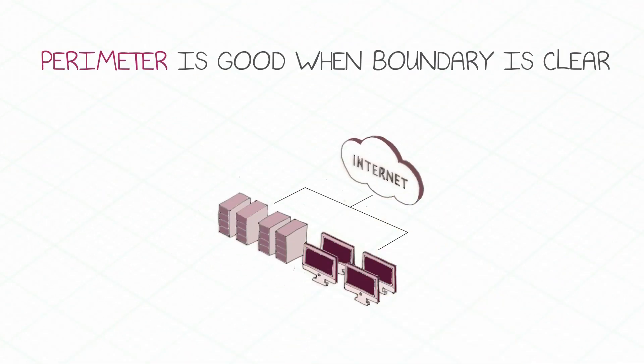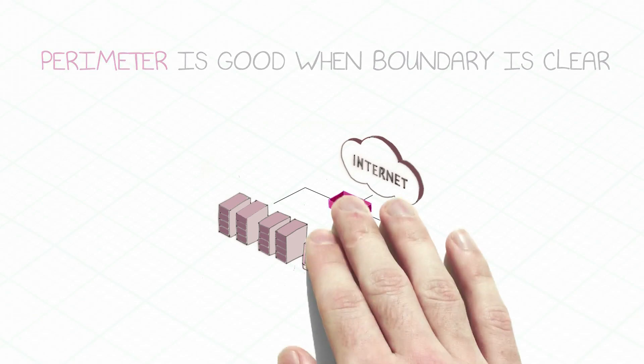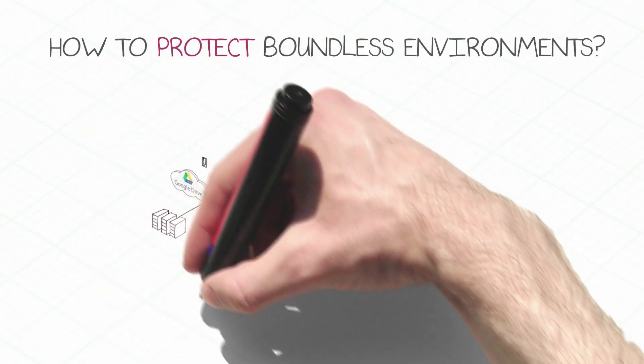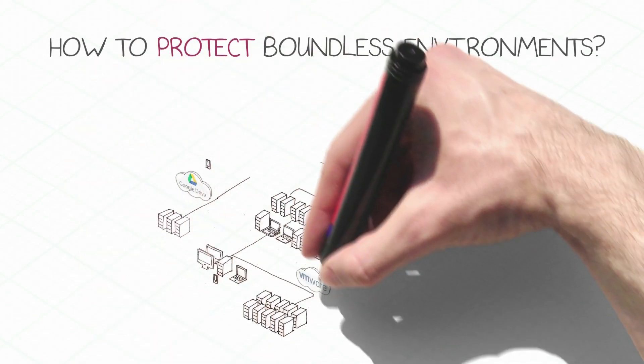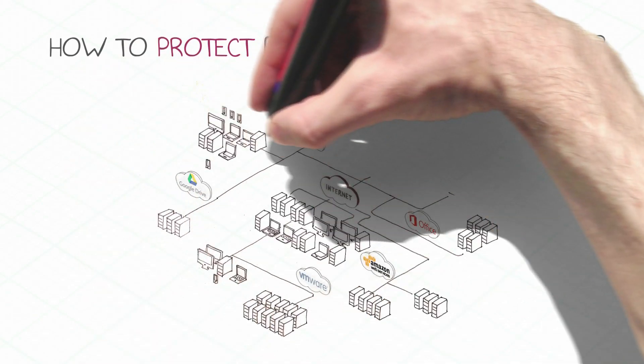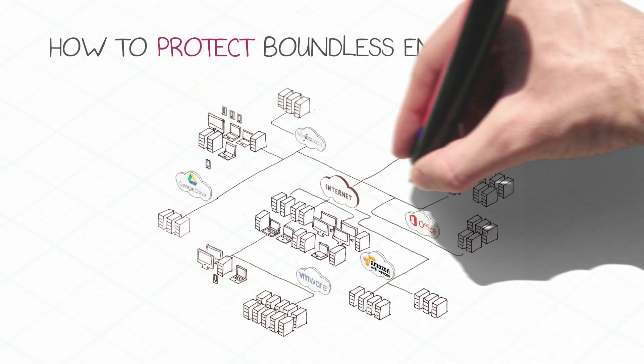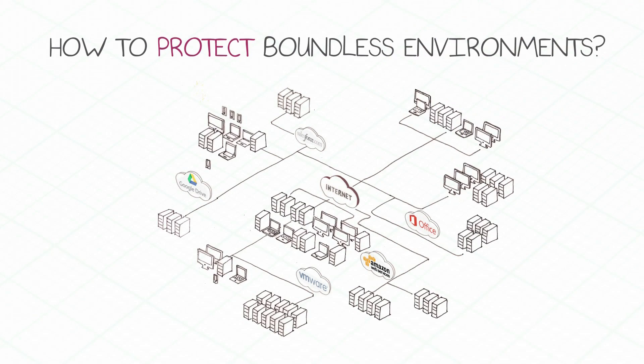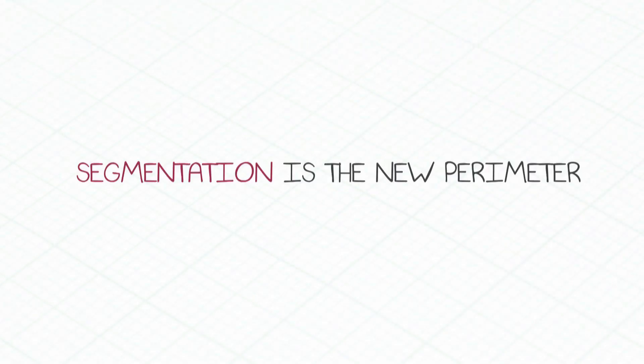When networks were simple, we could enforce protections on the perimeter alone. But when perimeters are not well defined, where should enforcement points be deployed? Segmentation is the answer. It is the new perimeter.